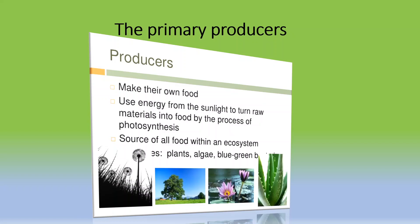A food chain is a succession of organisms that eat other organisms and may in turn be eaten themselves. Plants are known as primary producers because they can make their own food. They use energy from sunlight to turn raw materials into food by the process of photosynthesis.